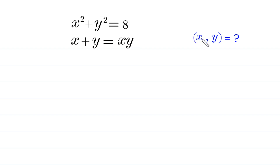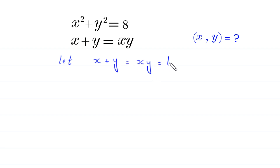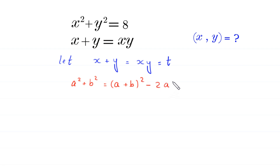Let's start. We suppose that x plus y is equal to x times y, equal to t. By using the algebraic identity a squared plus b squared is equal to a plus b whole squared minus 2ab, the expression x squared plus y squared can be rewritten.